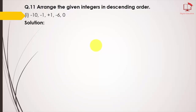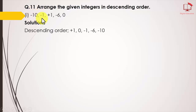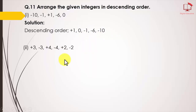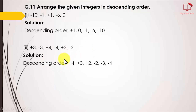Question number 3: Arrange the given integers in ascending and descending order. Part 1: minus 10, minus 1, positive 1, minus 6, and 0. Descending order means from higher to lower: positive 1, 0, minus 1, minus 6, minus 10. Part 2: positive 3, minus 3, minus 4, positive 4, minus 2, positive 2. Descending order: positive 4, positive 3, positive 2, minus 2, minus 3, minus 4.